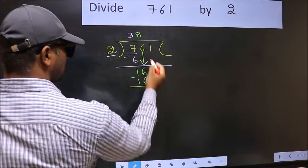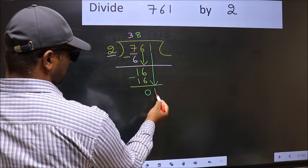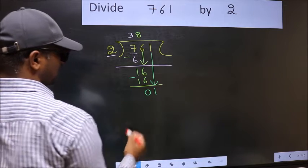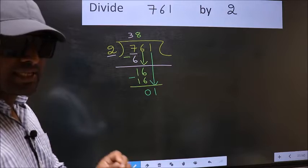After this, you should bring down the beside number. So, 1 down. After this step, the mistake happens. And the mistake is this.